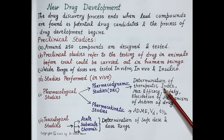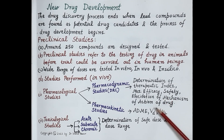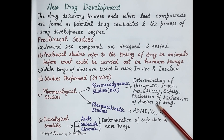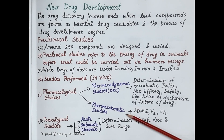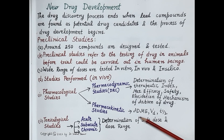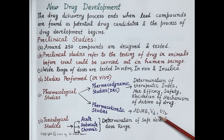The therapeutic index predicts the safety of the drug. The dose-response curve (DRC) also gives information on maximum efficacy and safety of the drug, and the mechanism of action of the drug is elucidated through pharmacodynamic studies. Pharmacokinetic studies performed in vivo give information on absorption, distribution, metabolism, and excretion (ADME) of potential drug candidates, as well as volume of distribution (Vd) and half-life of the drug.